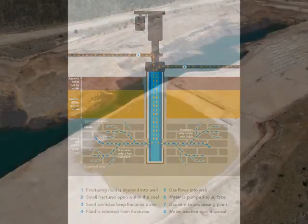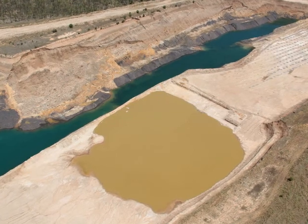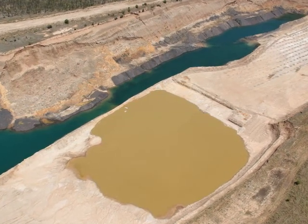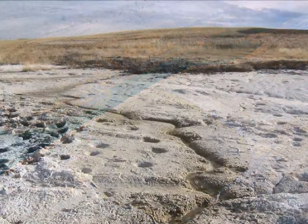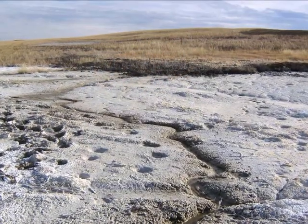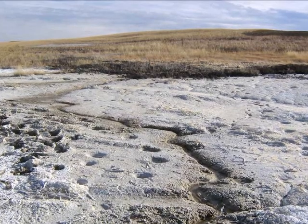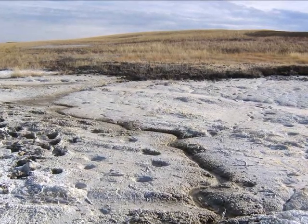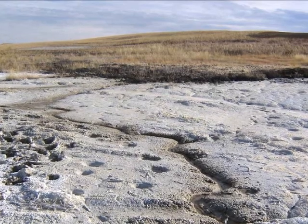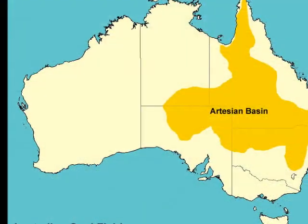Fracking also produces large quantities of salt water as a by-product. It is because of this waste water that salinity levels in the soil are increasing, affecting the plant's ability to take up calcium and magnesium ions which are essential for plant growth, rendering the soil useless for agriculture.